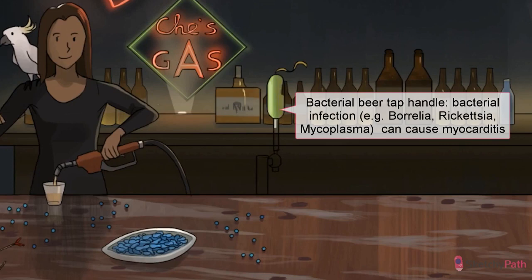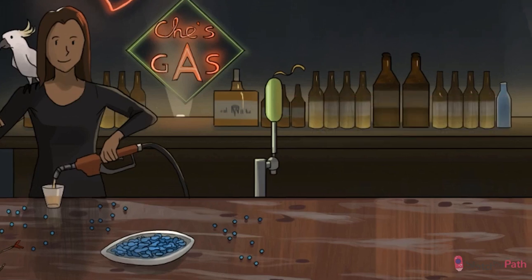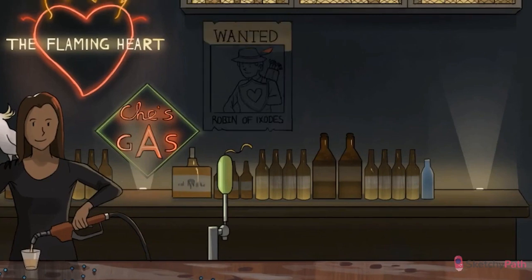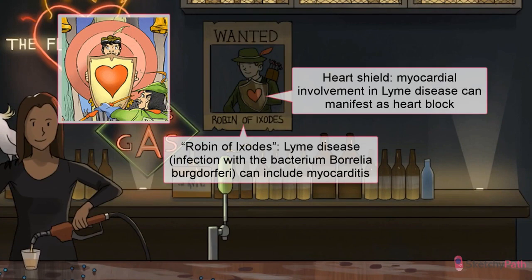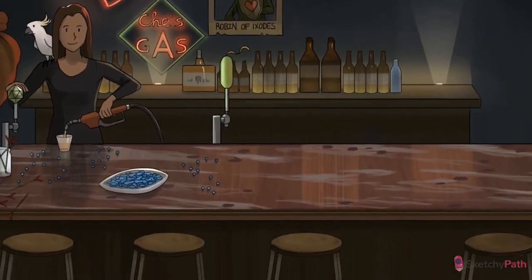Non-viral causes of myocarditis include pretty much every infectious agent you can think of. The bacterial-themed handle should remind you of numerous bacterial infections that can lead to myocarditis, such as Rickettsia and Mycoplasma. The most important bacterial cause to remember, however, is Borrelia burgdorferi, the causative agent of Lyme disease, commonly transmitted by the Ixodes tick. Myocarditis occurs in about 5% of patients with Lyme disease, usually manifesting as a conduction system defect like heart block. It is usually self-limited, though it often requires insertion of a temporary pacemaker.